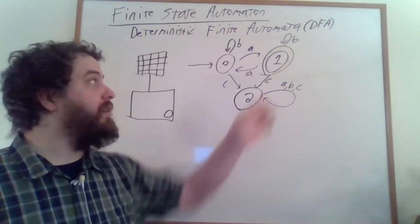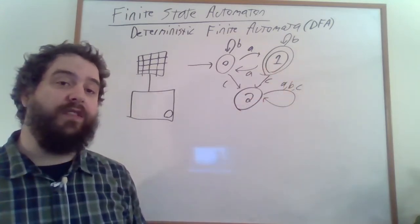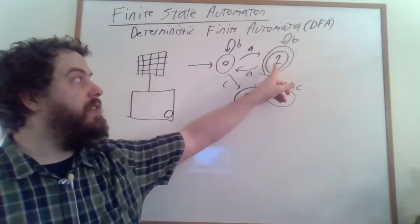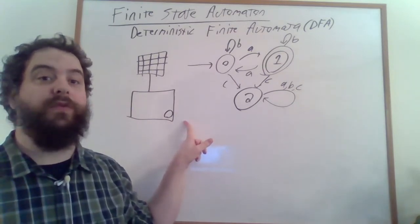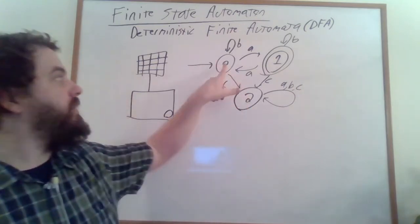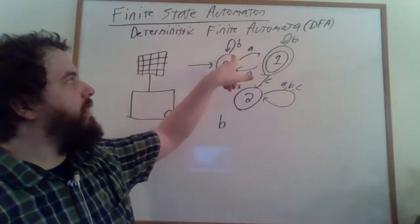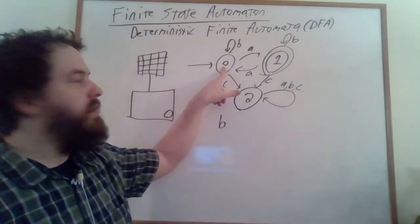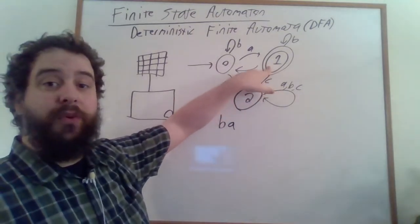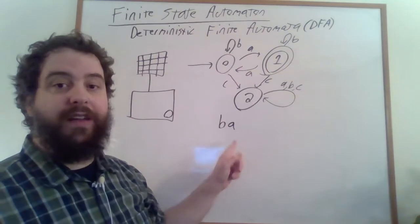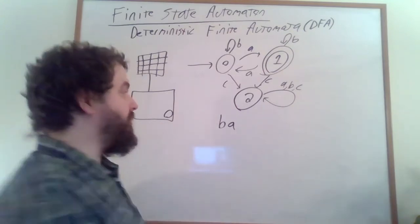The other piece of information we have here are these double circles — I've double-circled only one state, but you can double-circle as many states as you want. This is what's called the accept state. It means that when the machine is in this state, the indicator light is on — it is happy with the word that I've typed in so far. So let's try running this machine. We start off in state 0, and suppose I type the letter B — we're going to follow this arrow back to state 0. Then I type the letter A, which takes me from state 0 into state 1. At this point, if this was just the entirety of our input, the indicator light would be on, and that would mean that we accept the word.